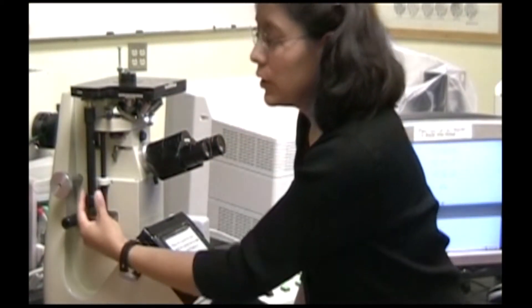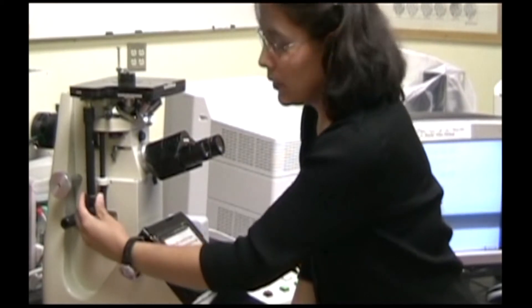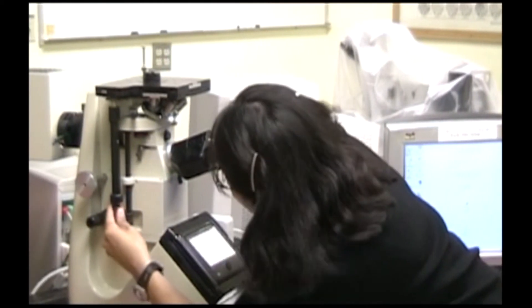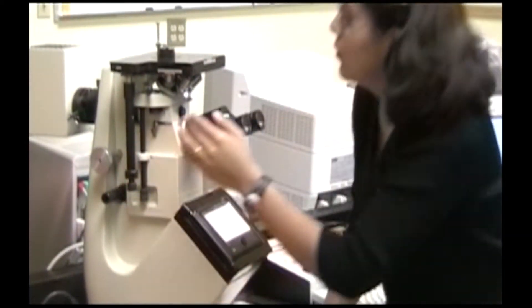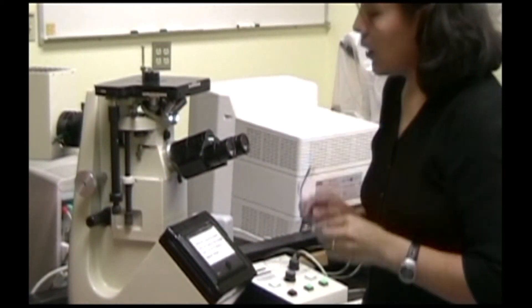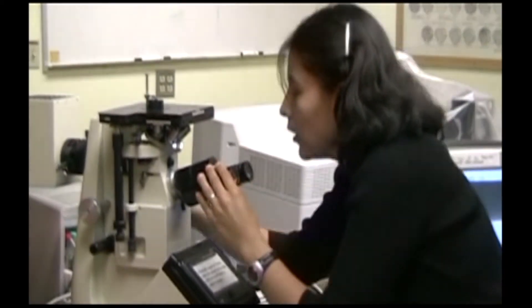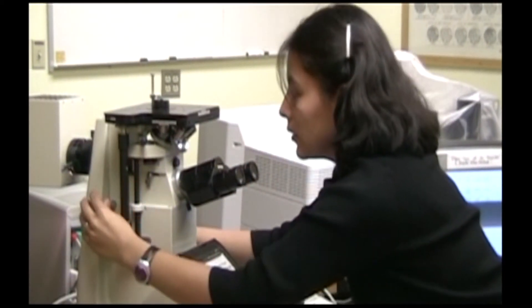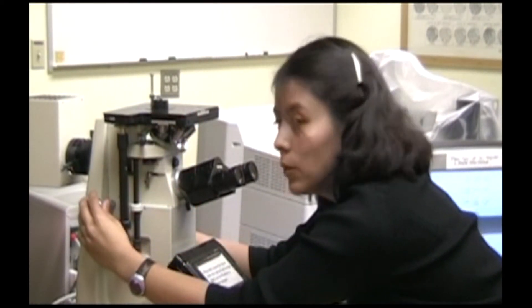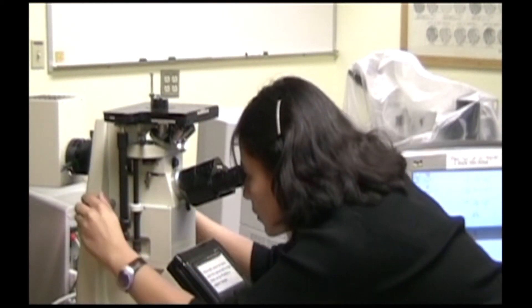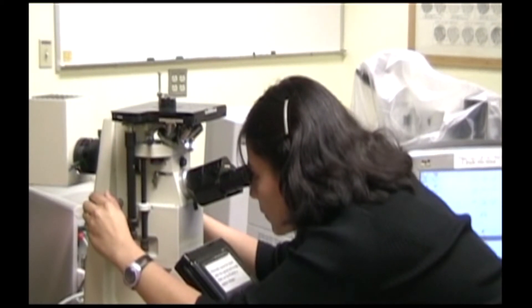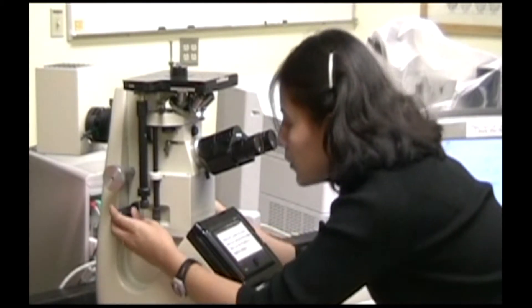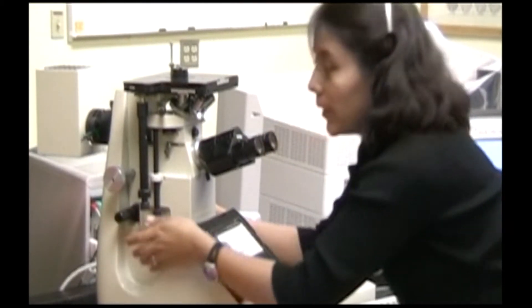Position your specimen so that the light is shining on it using these controls. While looking through the eyepiece, you should adjust the coarse focus knob and move your sample surface away from the objective lens while focusing. You can adjust the fine focus knob to further make the image more distinct.